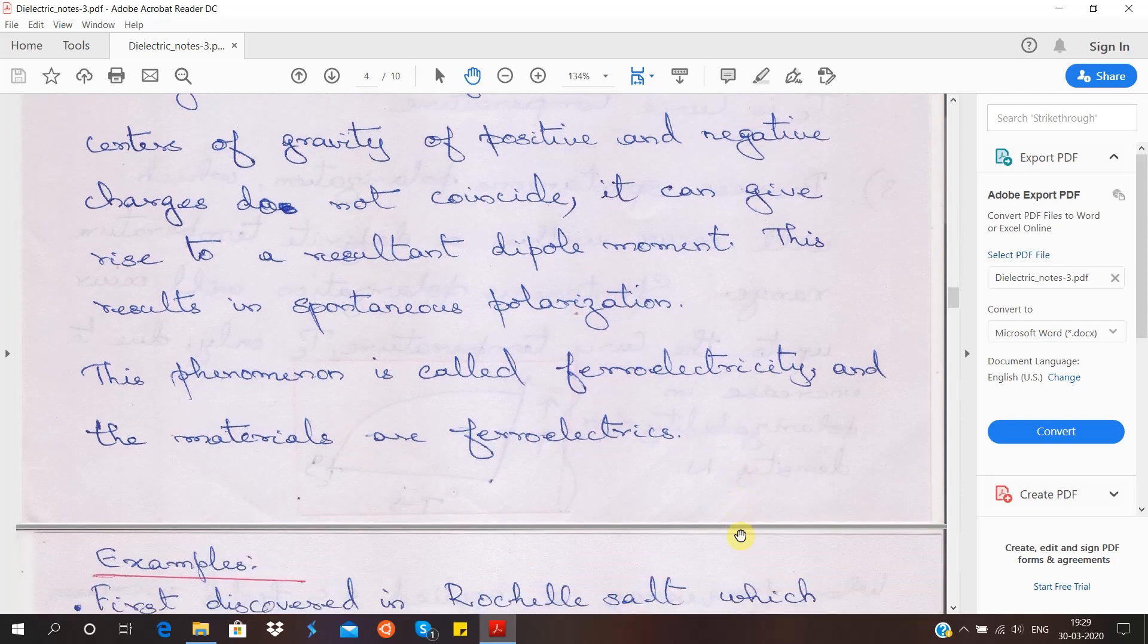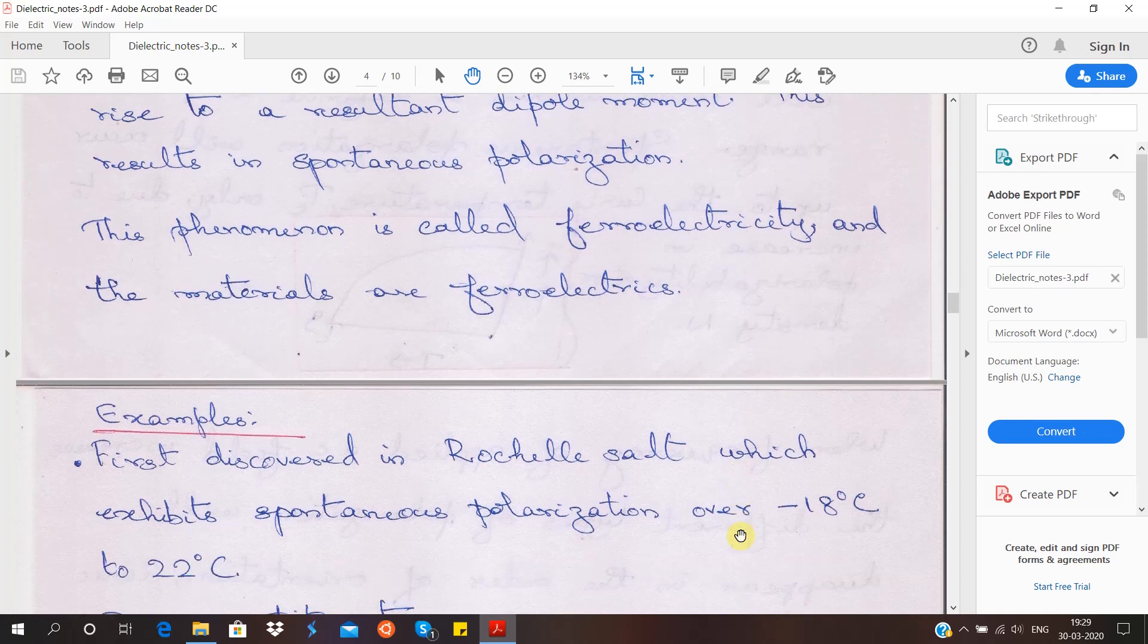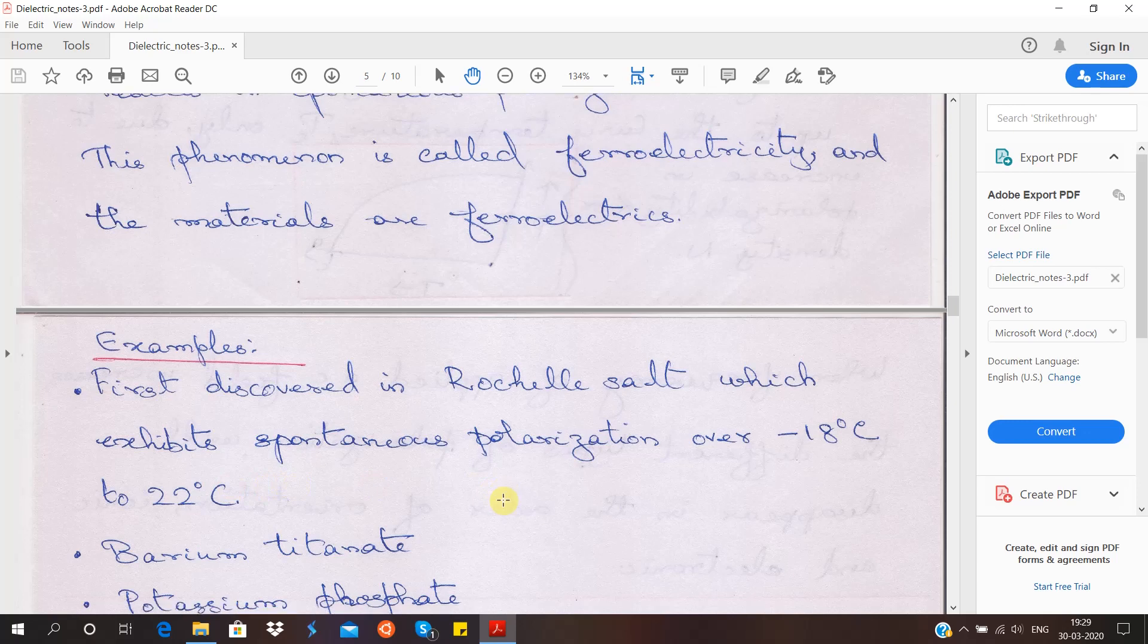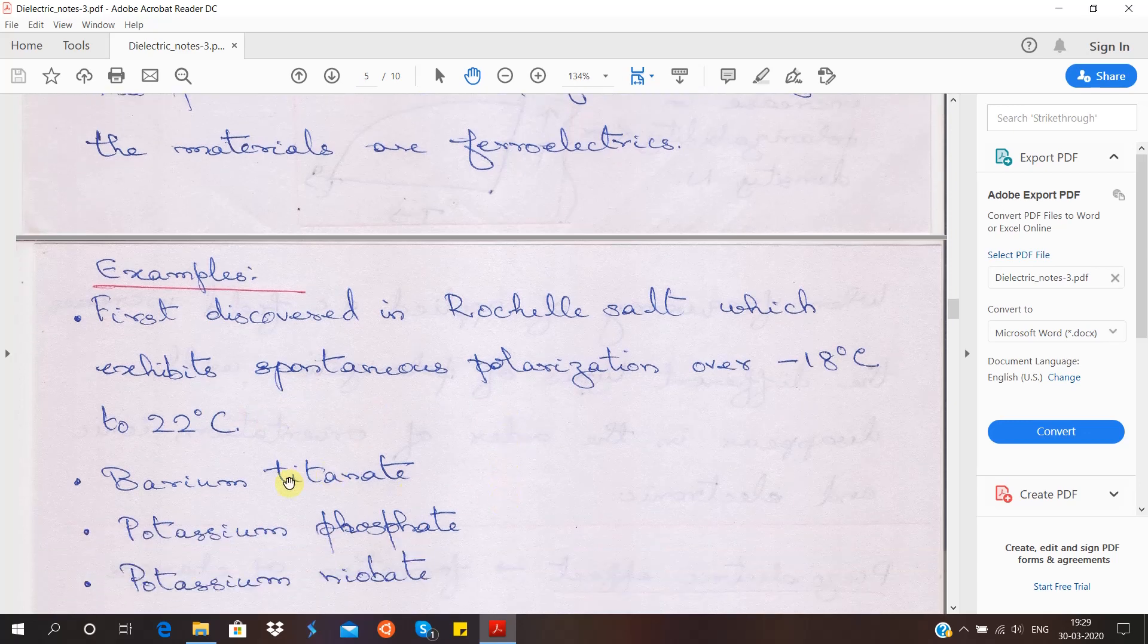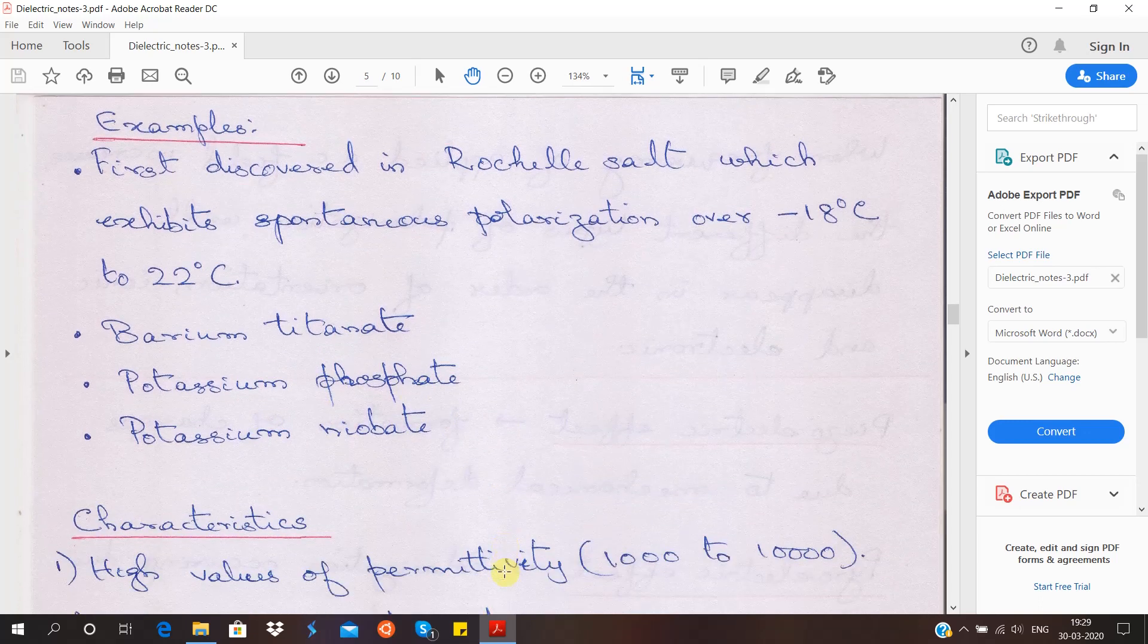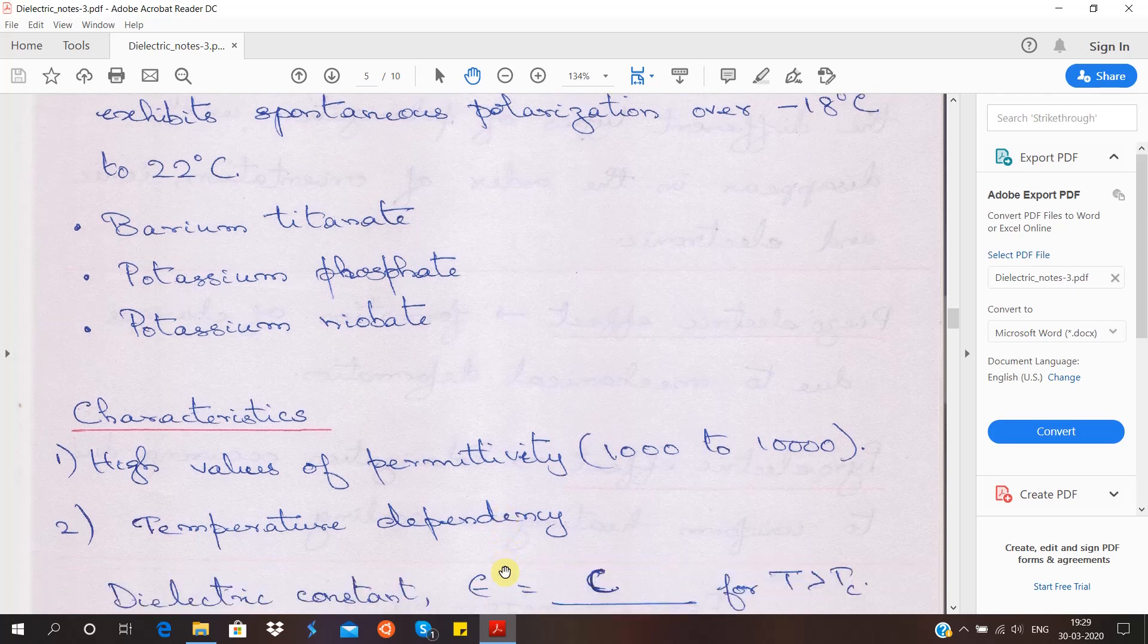Let us see some examples. This was first discovered in Rochelle's salt, which has polarization over a temperature range of minus 18 degrees to 22 degrees Celsius. We have other examples: barium titanate, potassium phosphate, and potassium neobate.